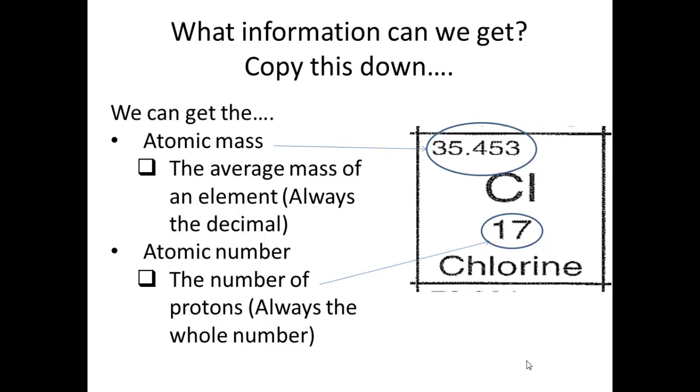Other information that we can get. The atomic mass is the average mass of an element. And it's always the decimal number. Okay? That's the way you can always recognize that. Also, the atomic number, which is the number of protons. That's always the whole number. If you guys like read left to right in your periodic table, it goes atomic number 1, 2, 3, 4, 5, 6, 7, 8, 9, 10, 11, 12, 13, 14, etc. Those are the atomic numbers on the periodic table. So that's the number of protons.